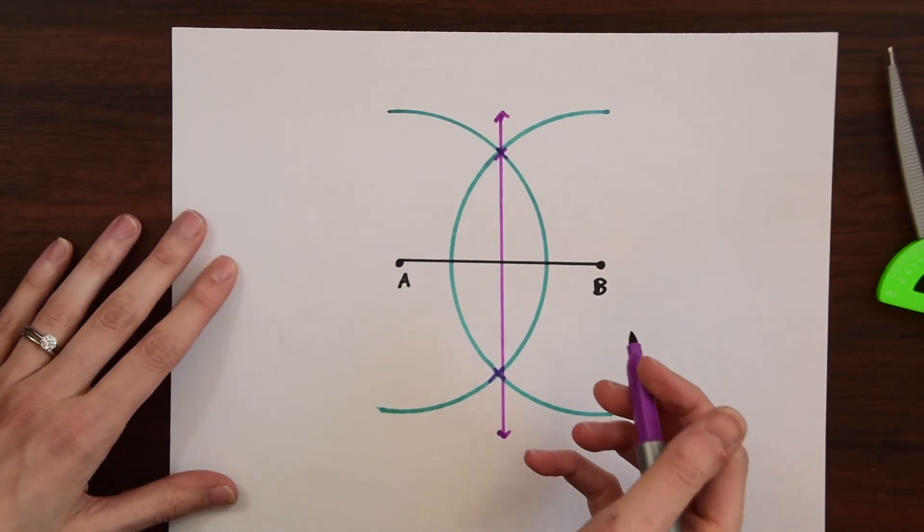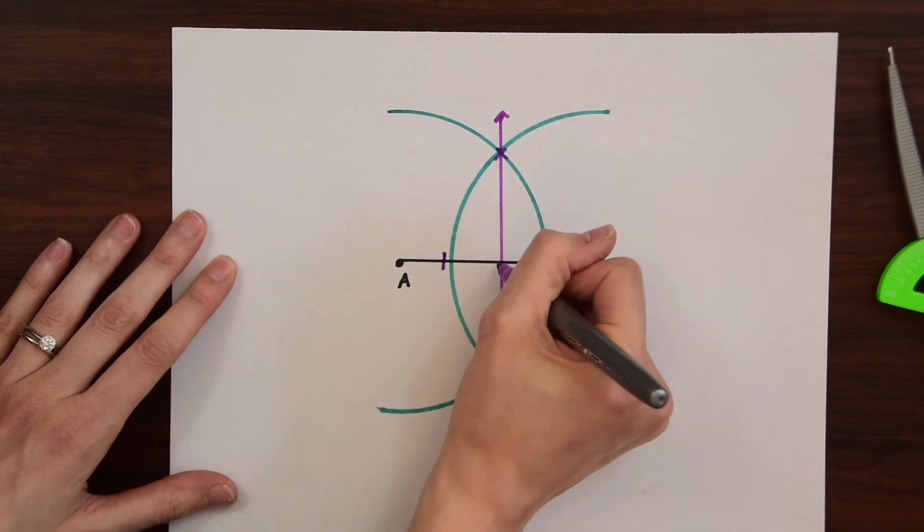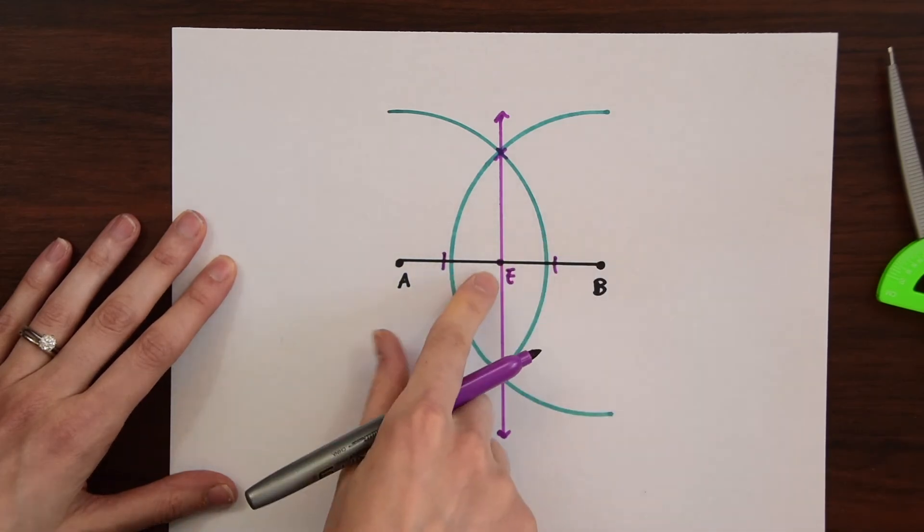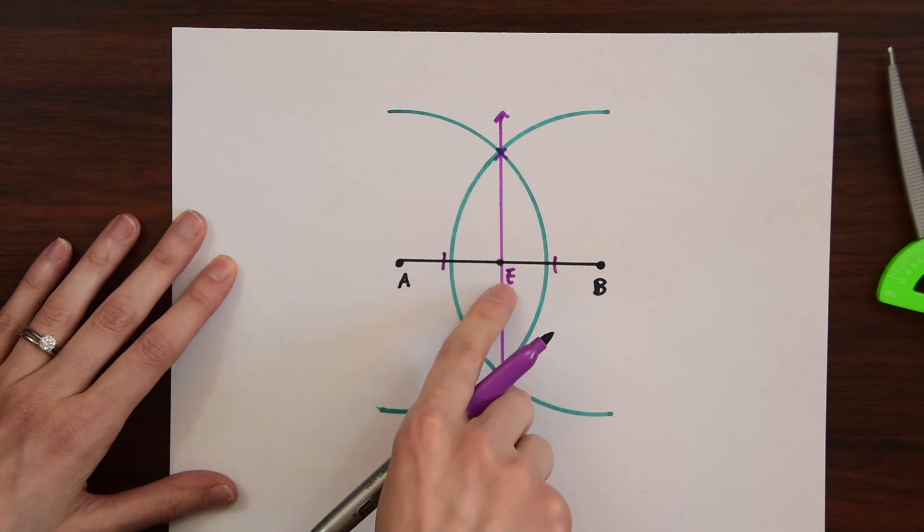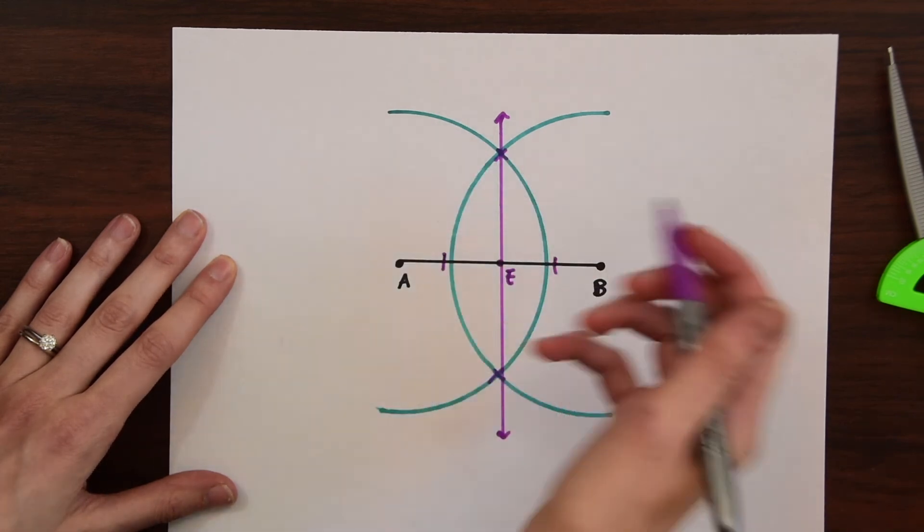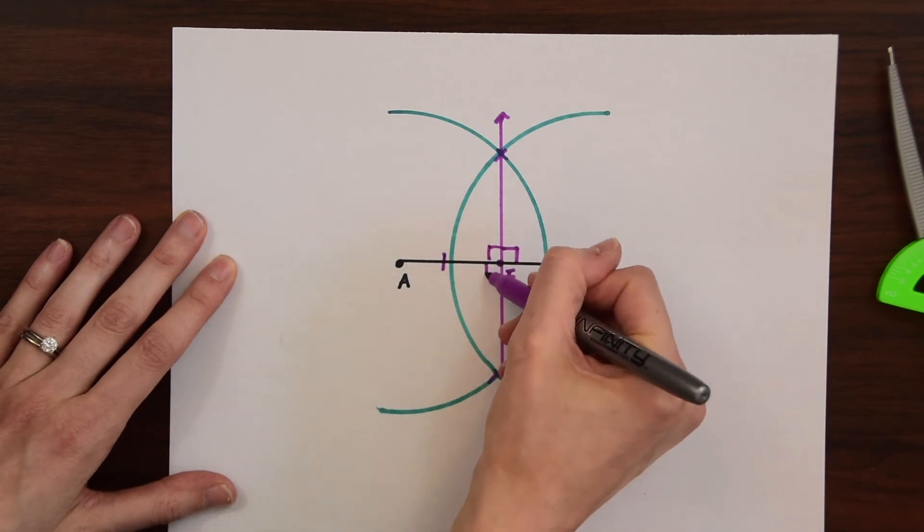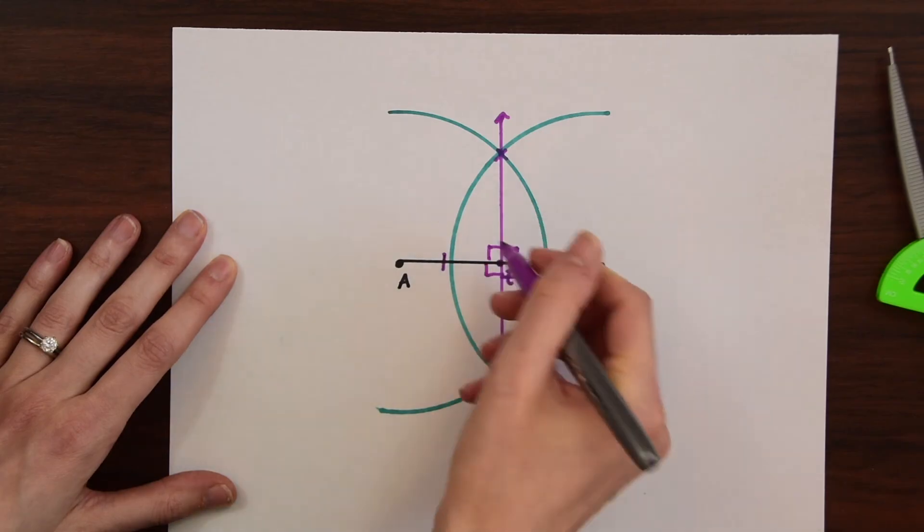So notice because we made this perpendicular bisector, we have two equal segments. So now if we put another point here, this is point E, we know that AE is congruent to EB. And another feature of our bisector that we just made is 90 degree angles all around this line, these lines here. So each of these is a 90 degree angle.